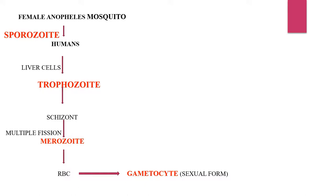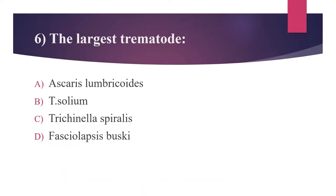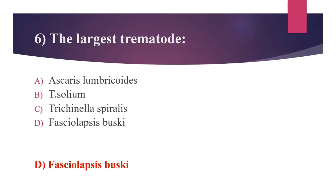The sixth question: What is the largest trematode? Option A: Ascaris lumbricoides. Option B: Taenia solium. Option C: Trichinella spiralis. Option D: Fasciolopsis buski. The answer is Fasciolopsis buski. Important parasitology size facts: largest human intestinal nematode is Ascaris lumbricoides; largest parasite overall is Ascaris lumbricoides; smallest nematode is Trichinella spiralis; largest trematode is Fasciolopsis buski; largest protozoan parasite is Balantidium coli; largest cestode found in human intestine is Diphyllobothrium latum; smallest tapeworm is Hymenolepis nana.